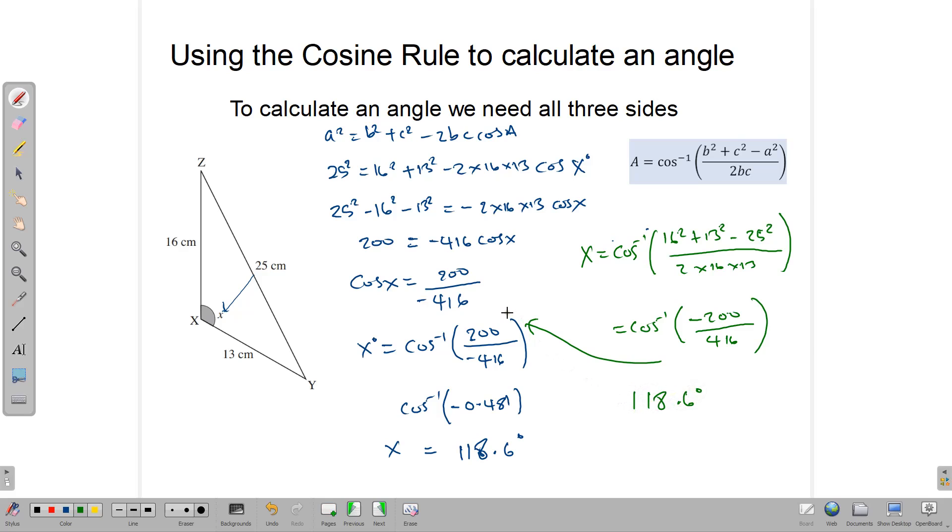So that is how we use it to calculate the size of an angle. You can use the cosine rule as is—it's a bit longer—or use it in this modified form to find the angle. Knowing it this way would mean that you only need to know one formula. This version should be on the CSEC formula sheet, but the modified version would not be.